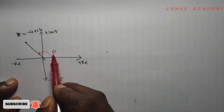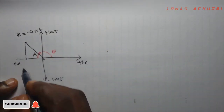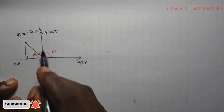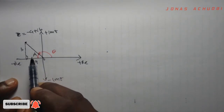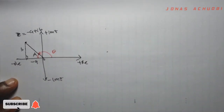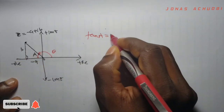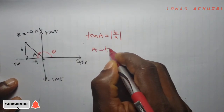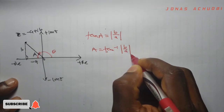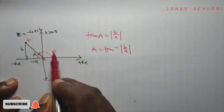To get the argument, we first find this acute angle here, which we call angle alpha. Completing the triangle, the real part is negative a and the imaginary part is b. The tangent of angle alpha is equal to the absolute value of b over a, so alpha equals the tan inverse of b over a. Note that alpha is not the argument theta we are looking for.